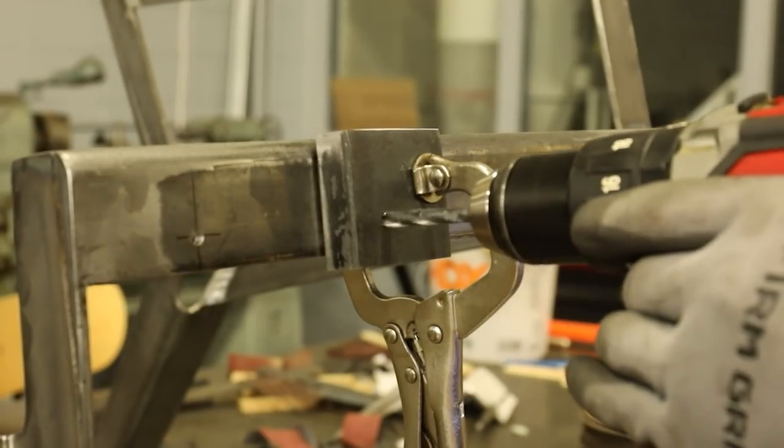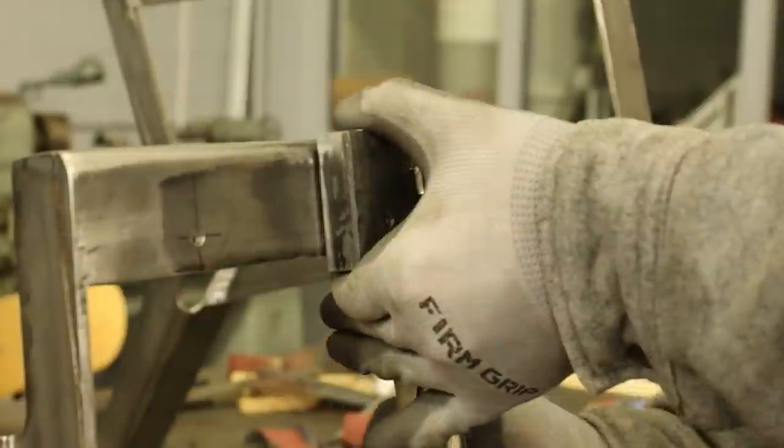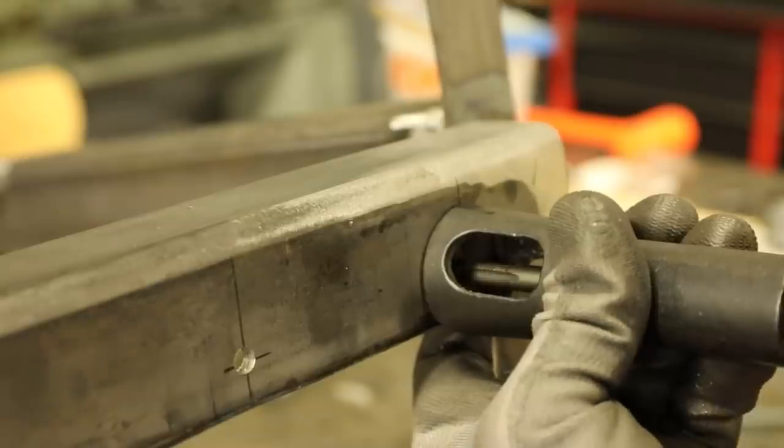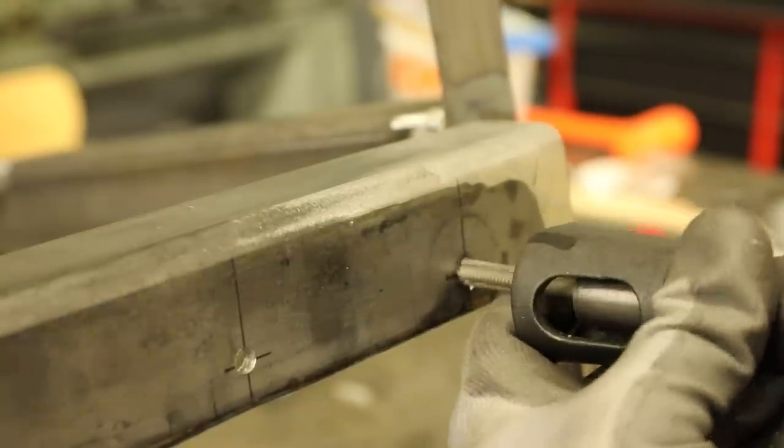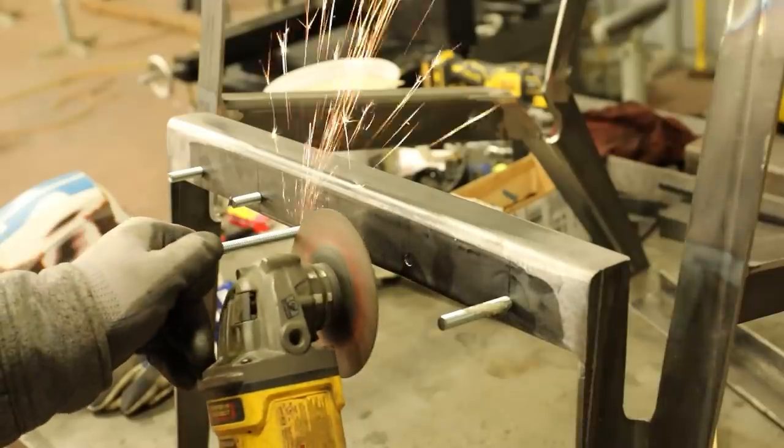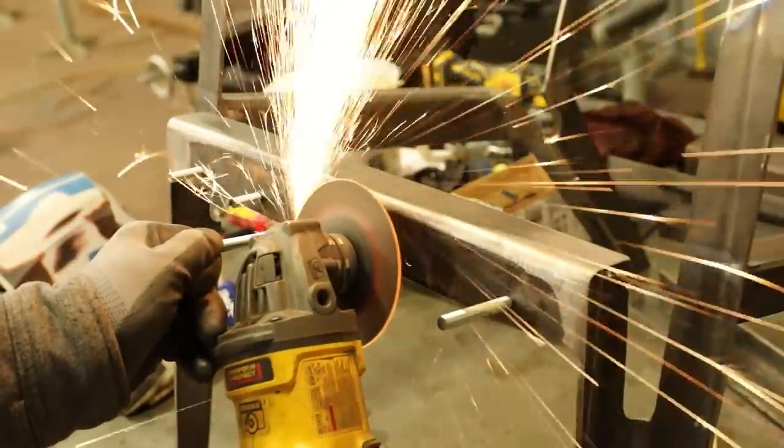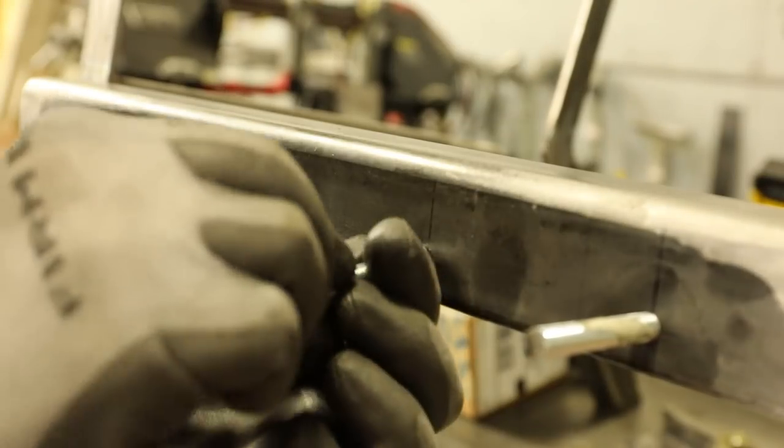In order to have the chair not have any visible fasteners, I would need to weld some studs onto the frame. The frame is tapped to ensure the stud is perpendicular, then the hole is countersunk and the stud can be welded on the face and ground flush.